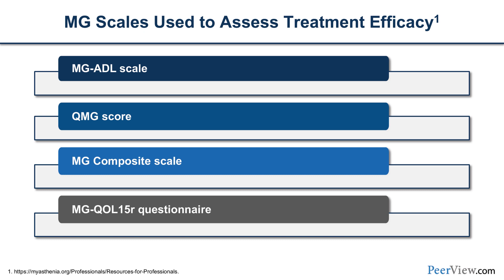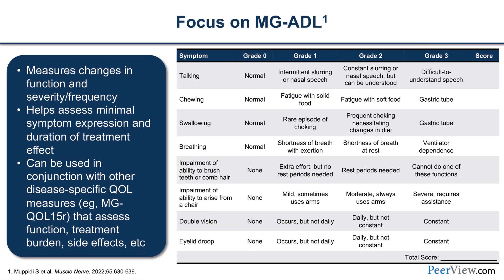The MG Composite gives a different slant looking at both symptoms as well as function. There is also an MG-specific quality-of-life instrument — the MG-QoL15r, a revised edition of the original — which is 15 items scored zero, one, or two. The ADL and QoL instruments are very easily administered and take no more than a couple of minutes in the clinic, but can give you good longitudinal data over time.